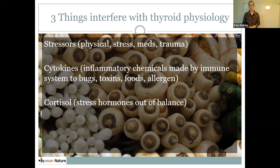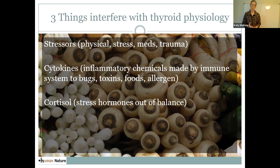I want to talk about three things that interfere with thyroid physiology. The first is stress. Physical stressors, like a chronic physical stress — an injury in the body, or someone who experienced physical trauma — can very much create a block or disruption in thyroid hormone production. So can certain medications, and so can chronic mental and emotional stress, which can create a barrier for making thyroid hormone in the body.